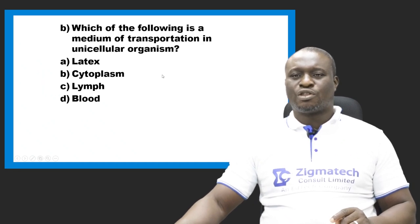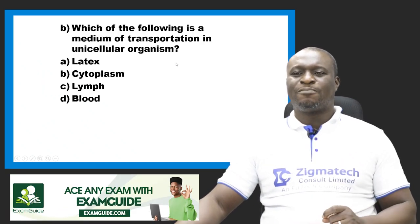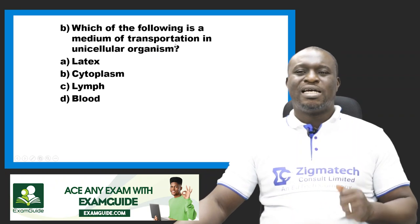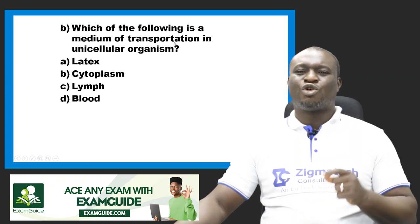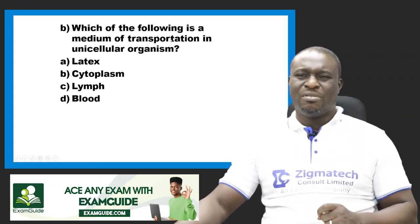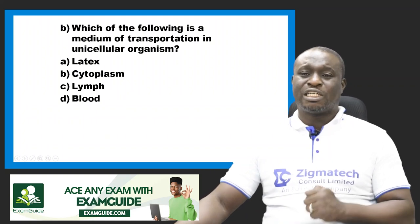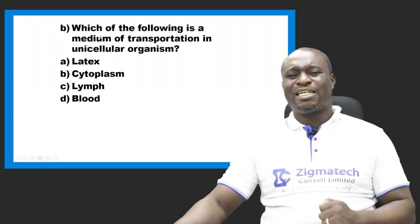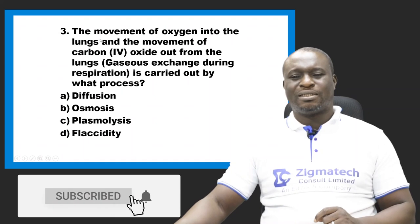Question 2: Which of the following is a medium of transportation in unicellular organisms? The medium of transportation in unicellular organisms is the cytoplasm.